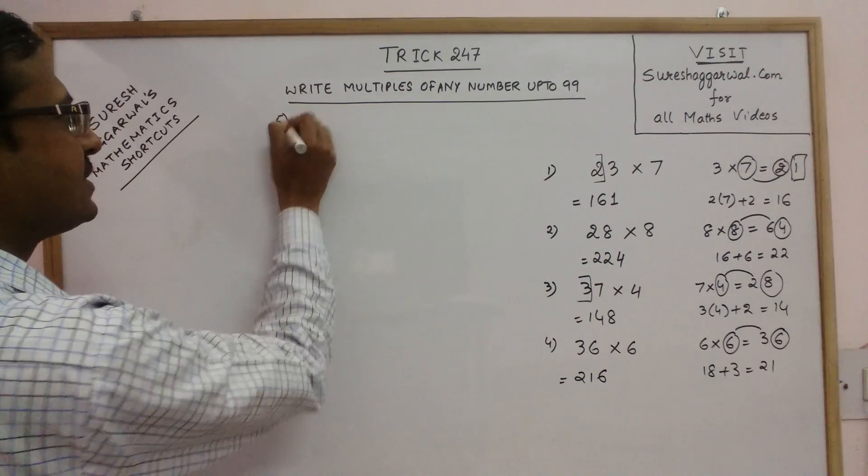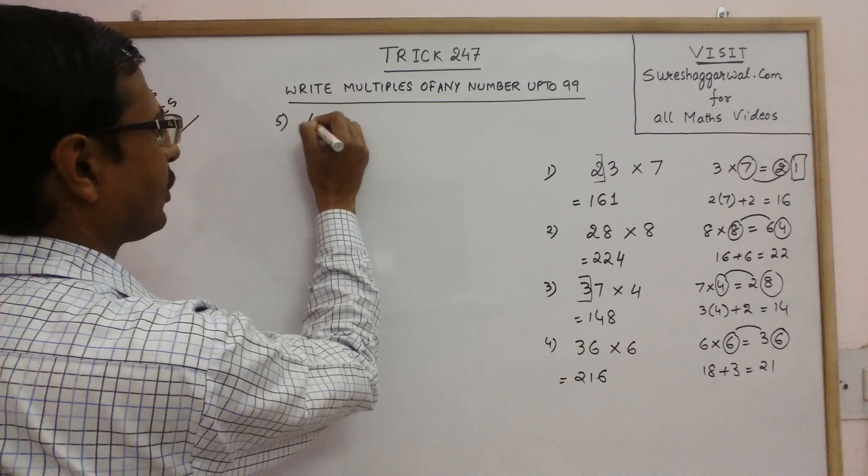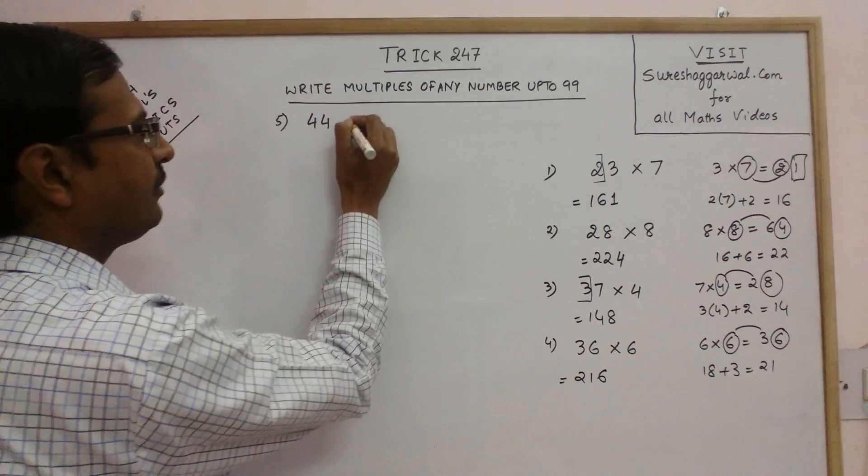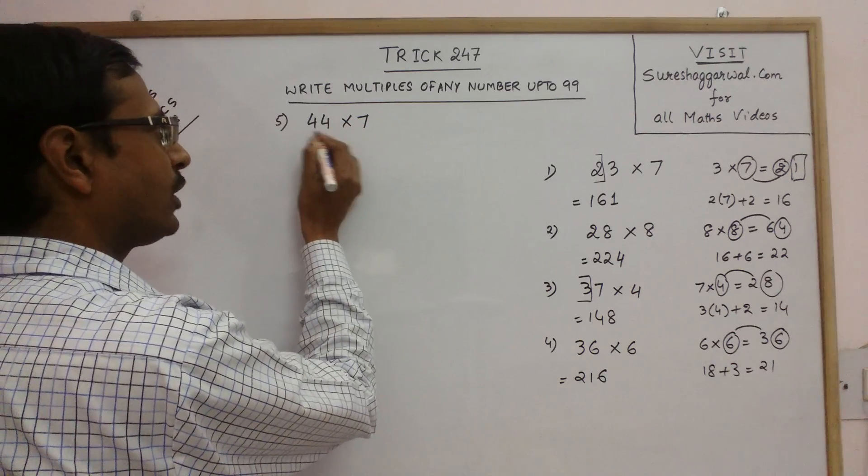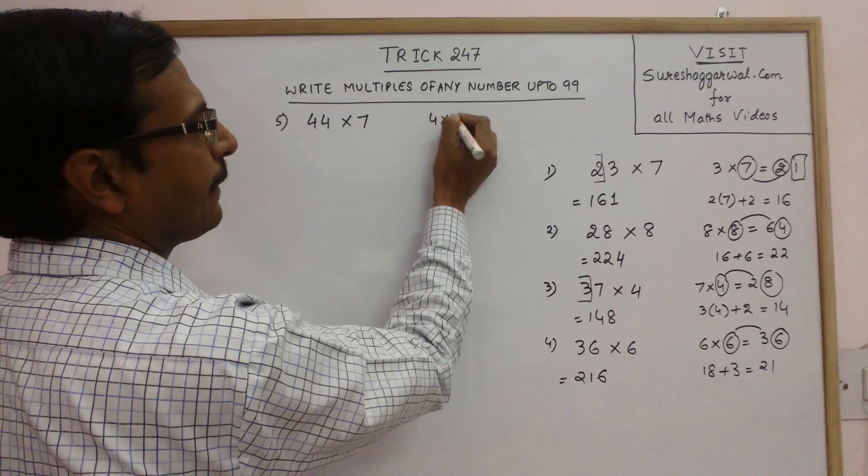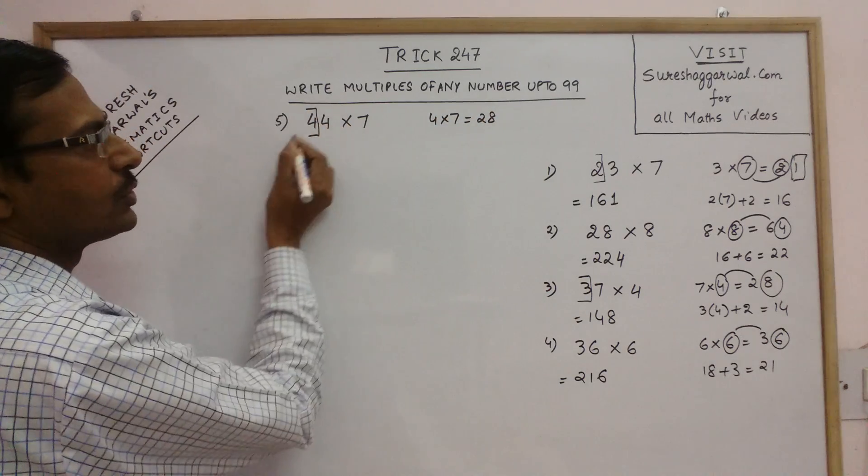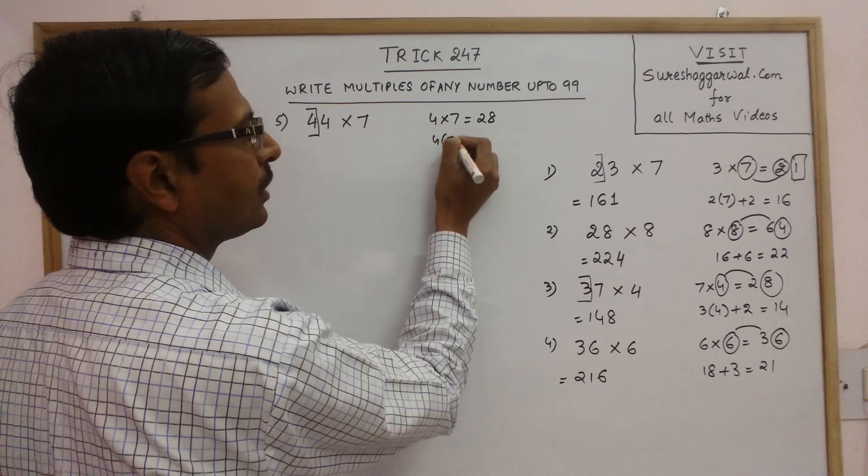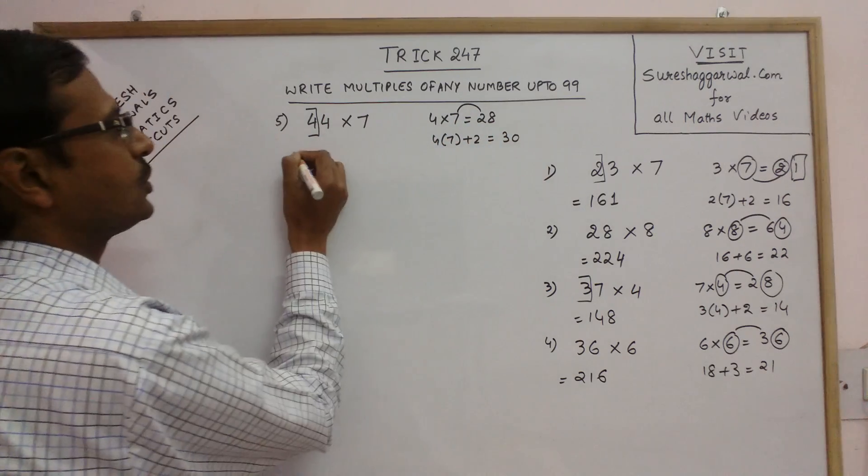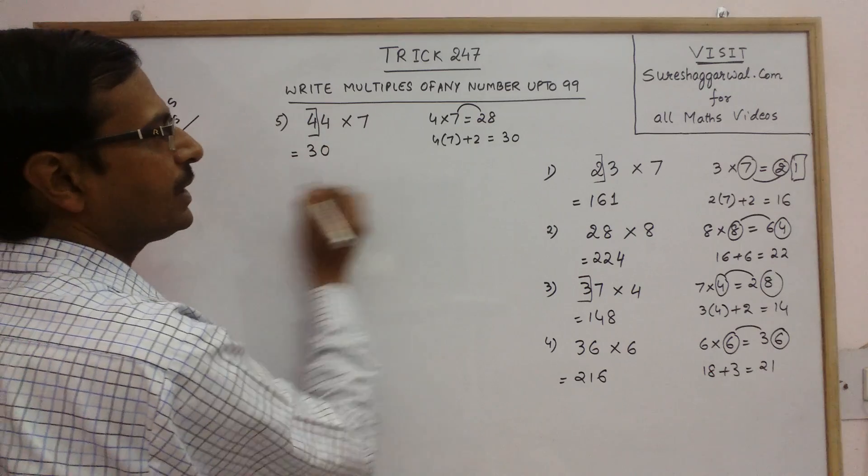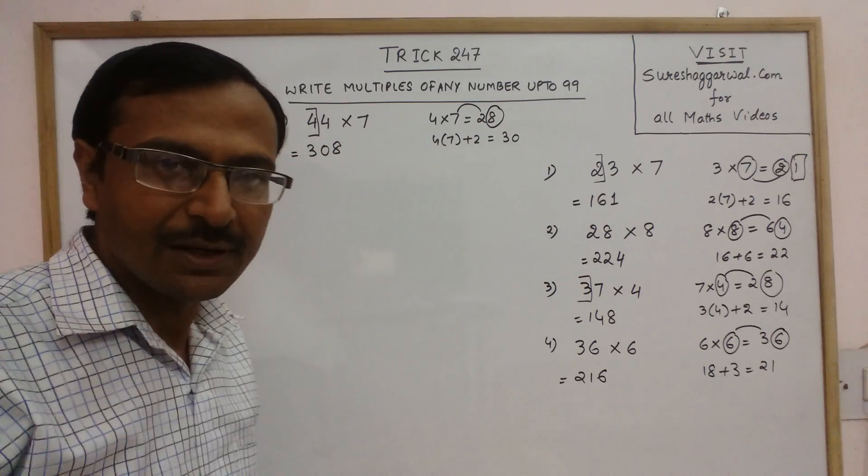Take more examples. Say we have number in the line of 40s now. Say we have 44 and we need to find the 7th multiple of 44. So don't do 44 into 7 just do 4 into 7. This is 28 and now what is the first digit? 4. So 4 times 7 added to this number 2. This is 30. So your product has 30 as the first part and what is the last part? This number 8. So 308 is the multiple.